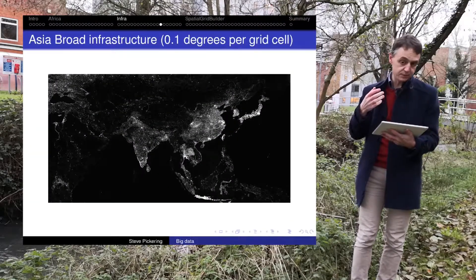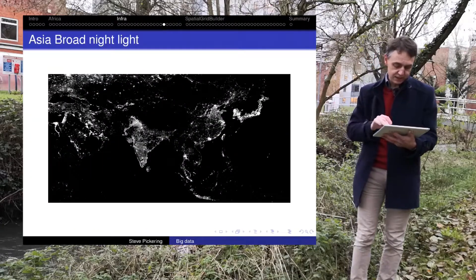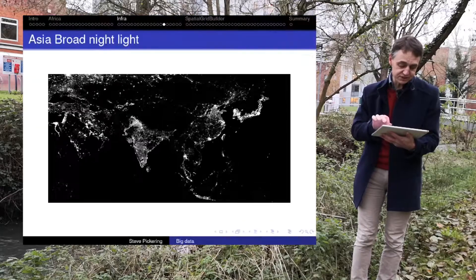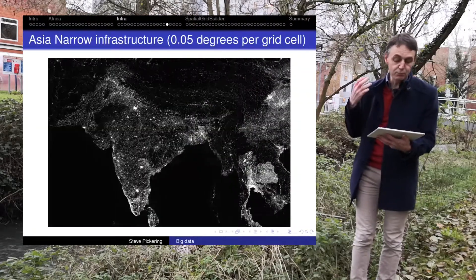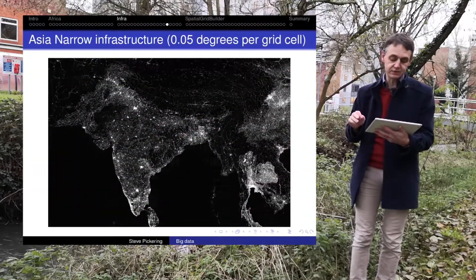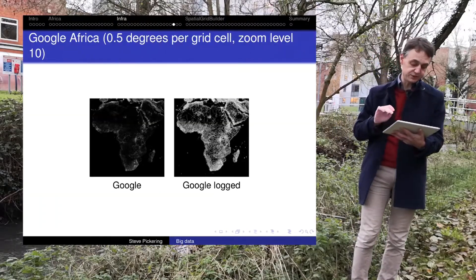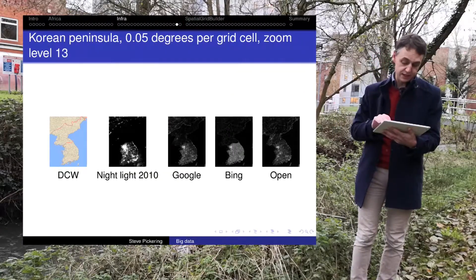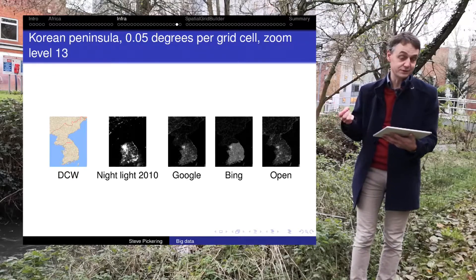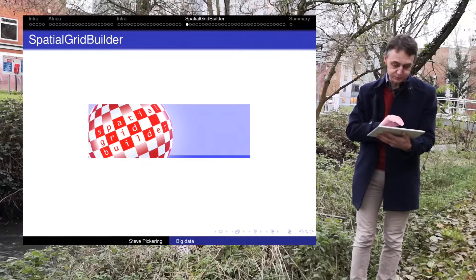These infrastructure measures look like night light images but are much more precise. For a broad definition of Asia we have the night lights, which are a rather coarse image and not very detailed. Using a narrower definition of Asia at even higher resolution — 0.05 degrees per grid cell — we get finer data, and it's useful for seeing things like where North Korea starts and South Korea ends. Bangladesh is also visible there.